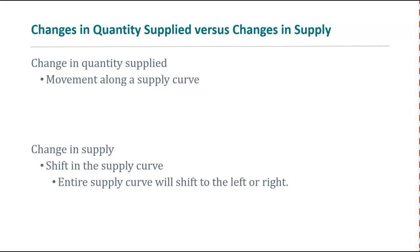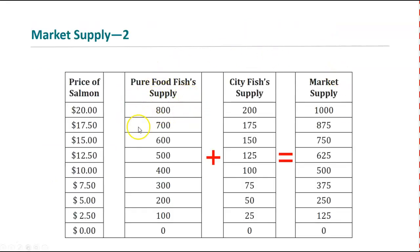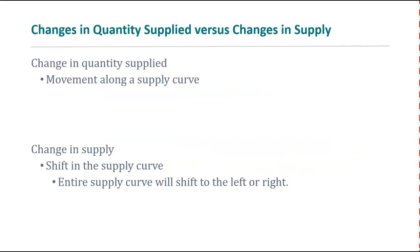Just like we discussed in the demand video, there's an important difference between quantity supplied and supply itself. Quantity supplied is one row of the supply schedule — a single point. For example, if the price of salmon is $17.50, Pure Food Fish's quantity supplied is 700 pounds. If the price changes to $10, quantity supplied changes to 400 pounds. Supply, on the other hand, is the whole table — the entire relationship between price and quantity. These two concepts sound similar but have a very important distinction.